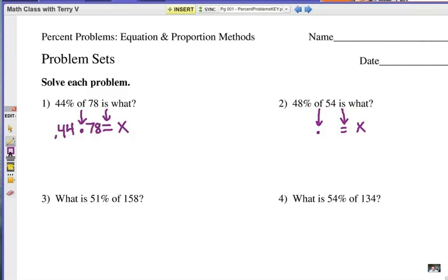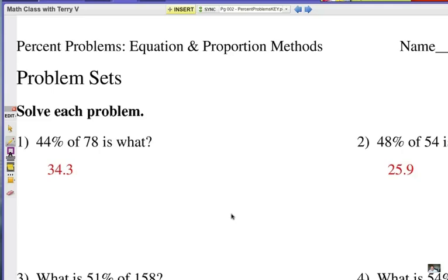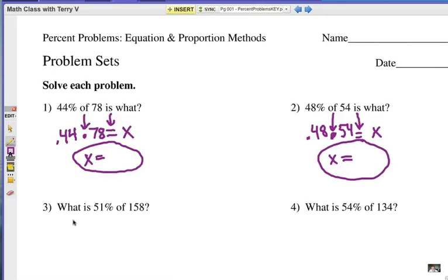So all I do is I translate it from a word problem into an equation. So here it would be .48 times 54. Now in these two cases, which happen to be the same structure, it's just plain old multiplication. I'm going to do .44 times 78. And that will give me my what number, the whole number. Here it's .48 times 54. And here are your two answers rounded to the nearest tenth. 34.3 and 25.9.